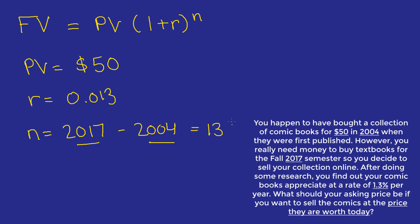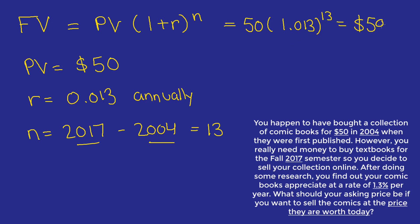Keep in mind that years do not always mean periods. But in this case, because the growth rate compounds annually, years do equal periods. So all we have to do is plug in the values: 50 times 1.013 raised to 13. That gives us a future value of $59.14. So we're really not making all that much by selling these comic books.